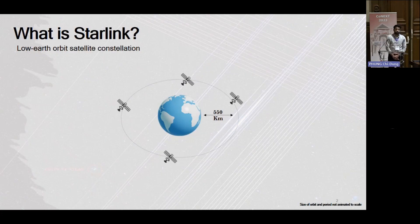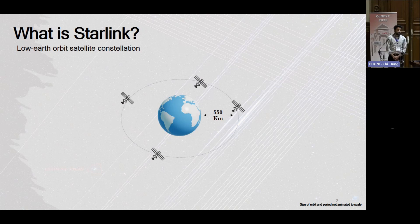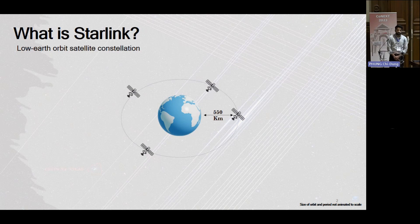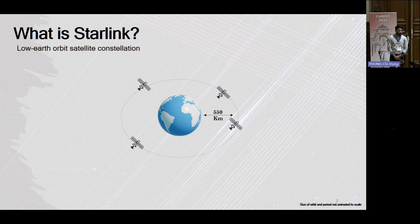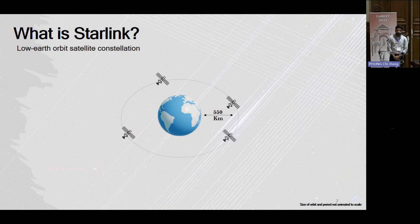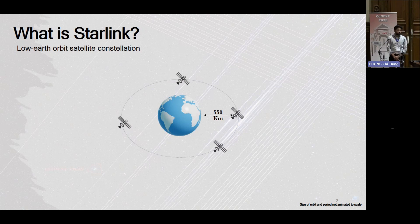Starlink is a low-Earth-orbit satellite constellation used to provide broadband internet. Low-Earth-orbit satellite constellation essentially means that all of the satellites in orbit are less than 2,000 kilometers away from the Earth. But in the case of Starlink, they're at about 550 kilometers. The current Starlink constellation consists of more than 5,000 satellites, but in its full and final form it will have somewhere around 12,000.